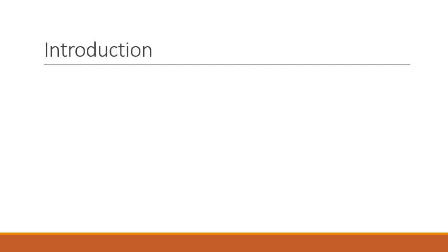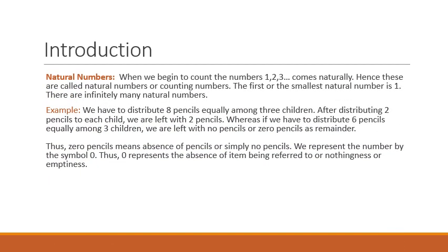Children, you know we need numbers for counting. When we begin to count any object, we start from one and keep on counting: one, two, three, and so on. Thus the counting always begins from one and it comes naturally to us. Hence we call these numbers the natural numbers or the counting numbers. We always start counting from one, so the smallest natural number is one. There are infinitely many natural numbers, so there is no largest natural number.